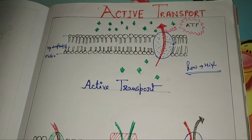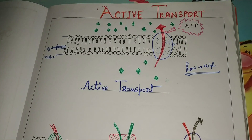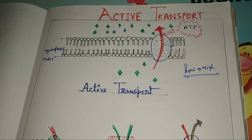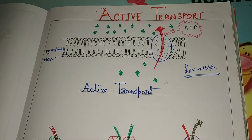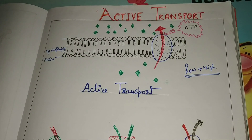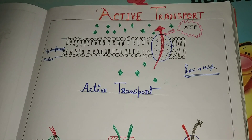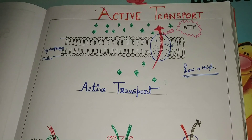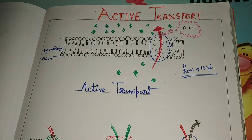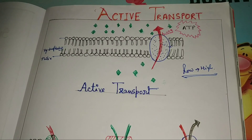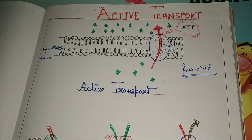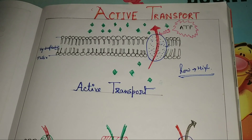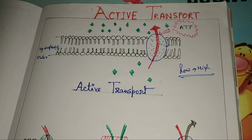Here you can see the blue portion — this is a channel protein, also called a carrier protein. There are two types: one is a channel — when its channel gate opens — and another one is a carrier molecule. Here you can see our carrier molecule, which carries substances from low concentration to high concentration.